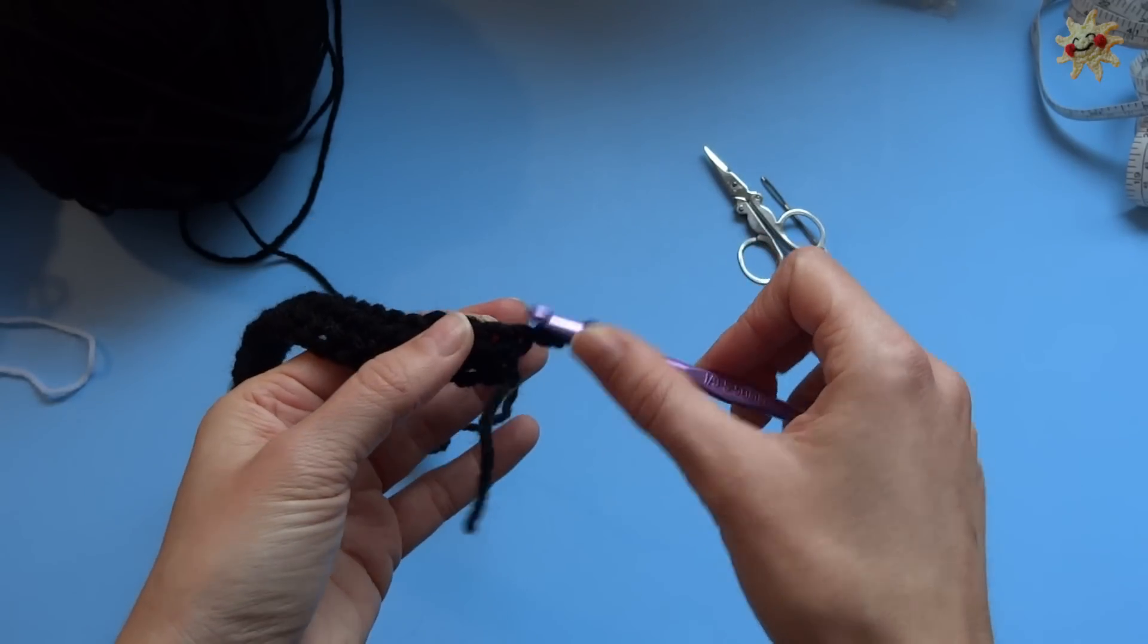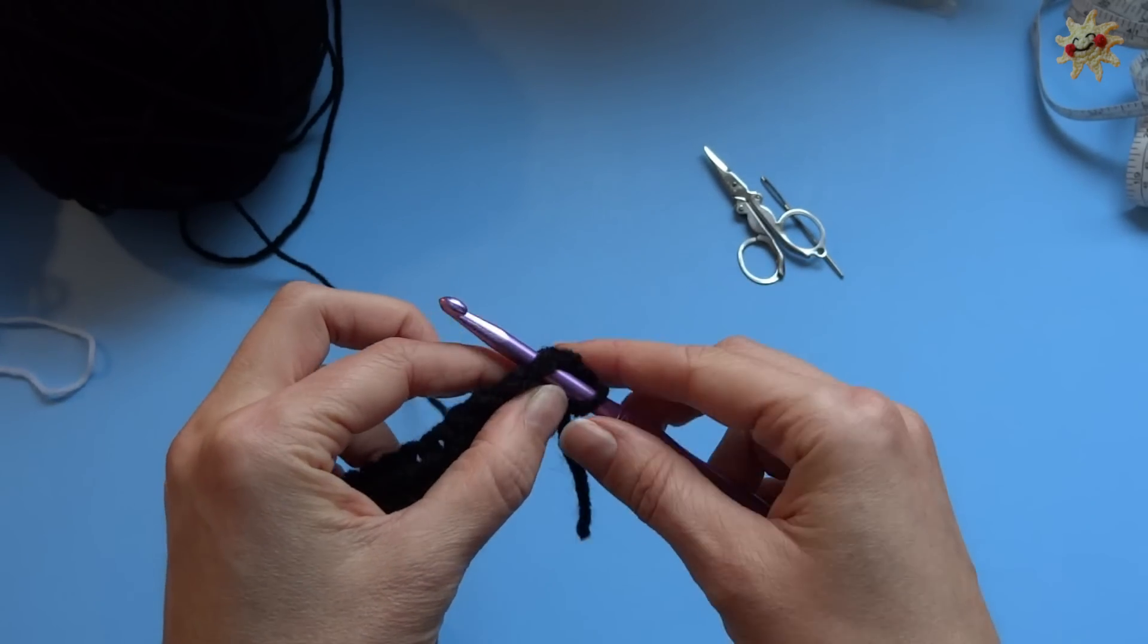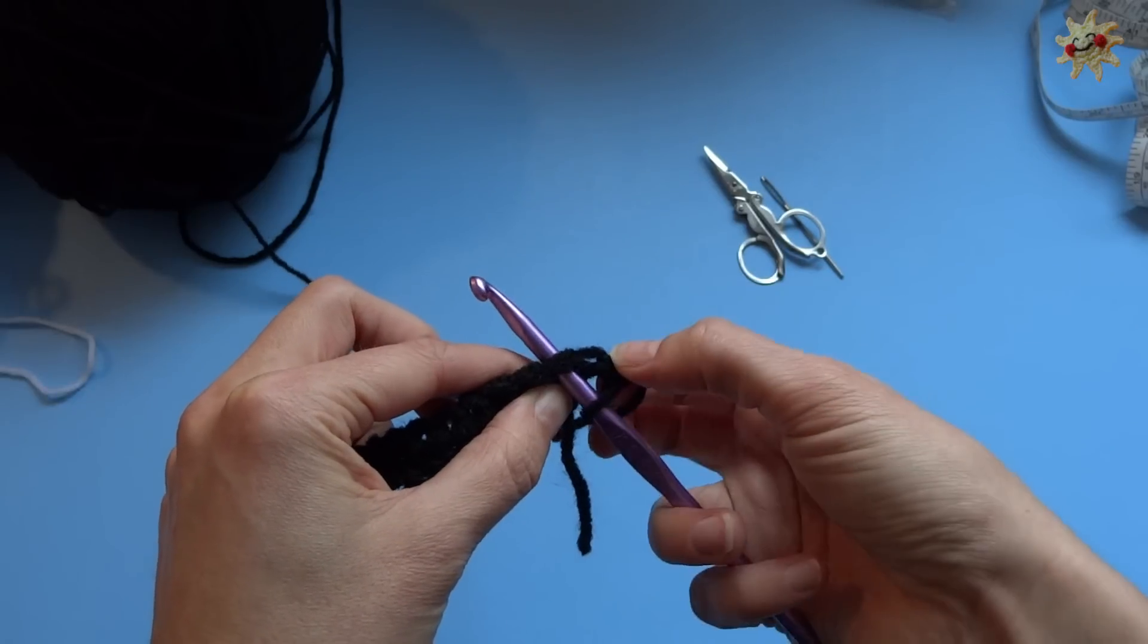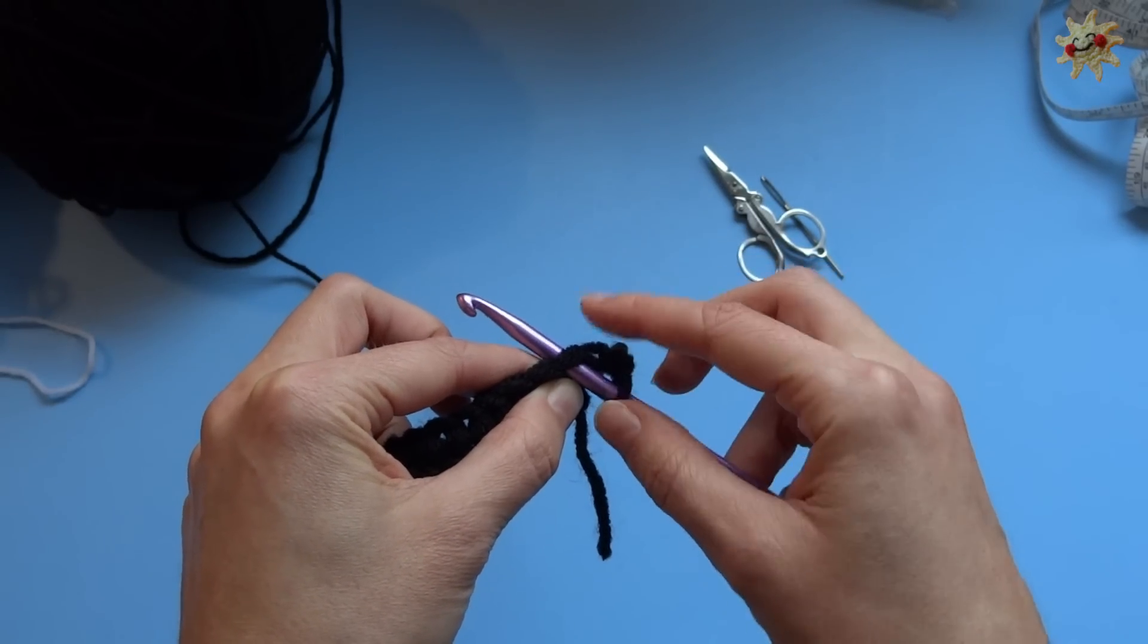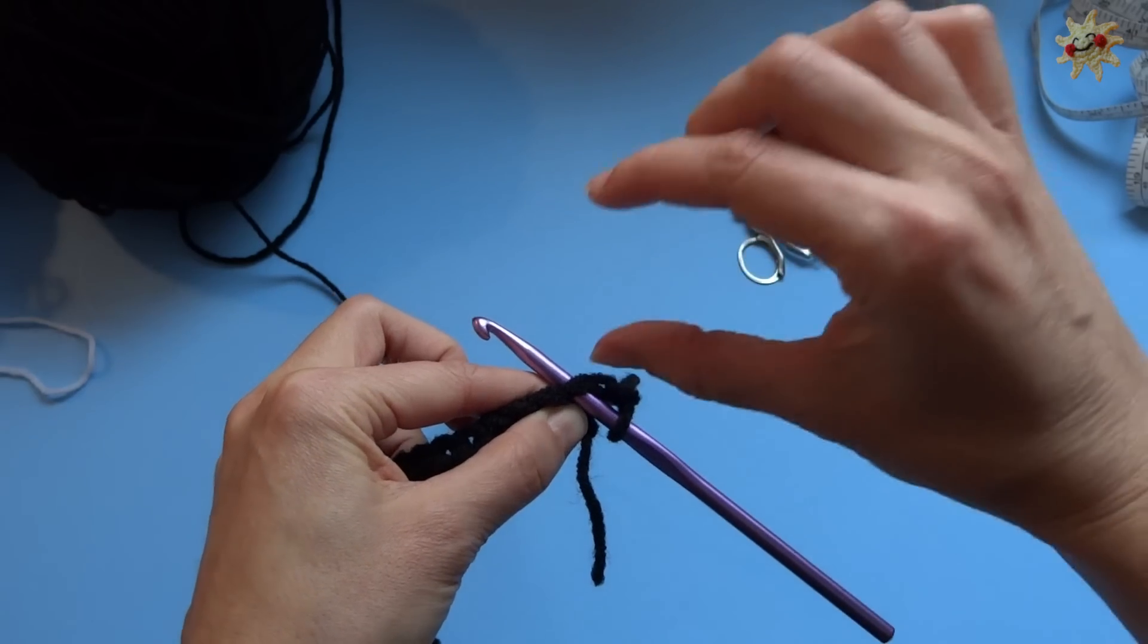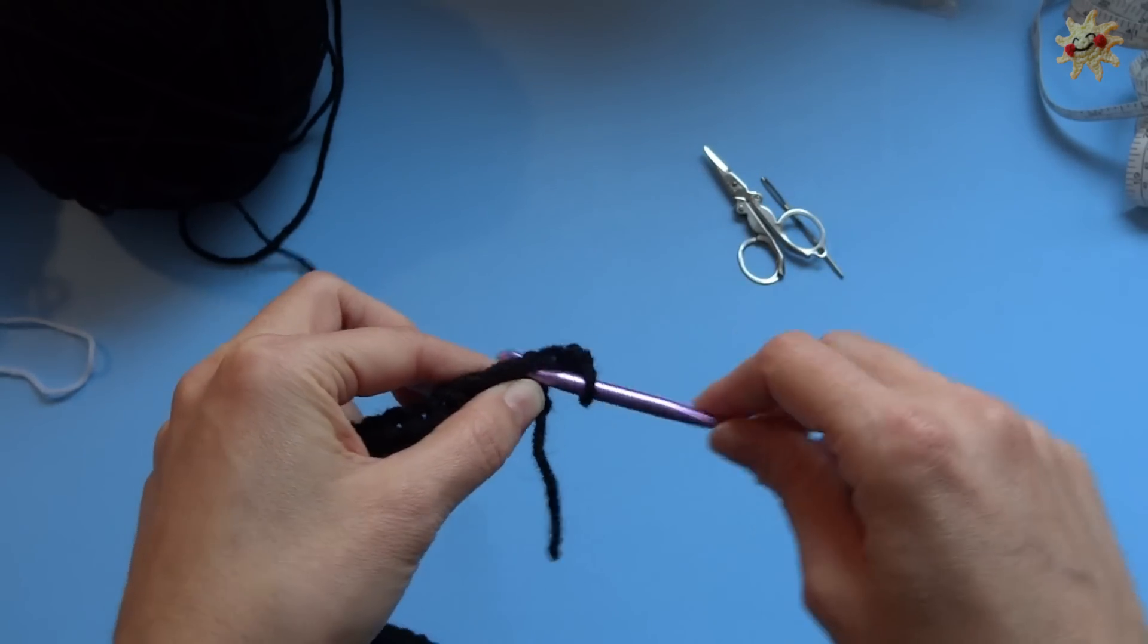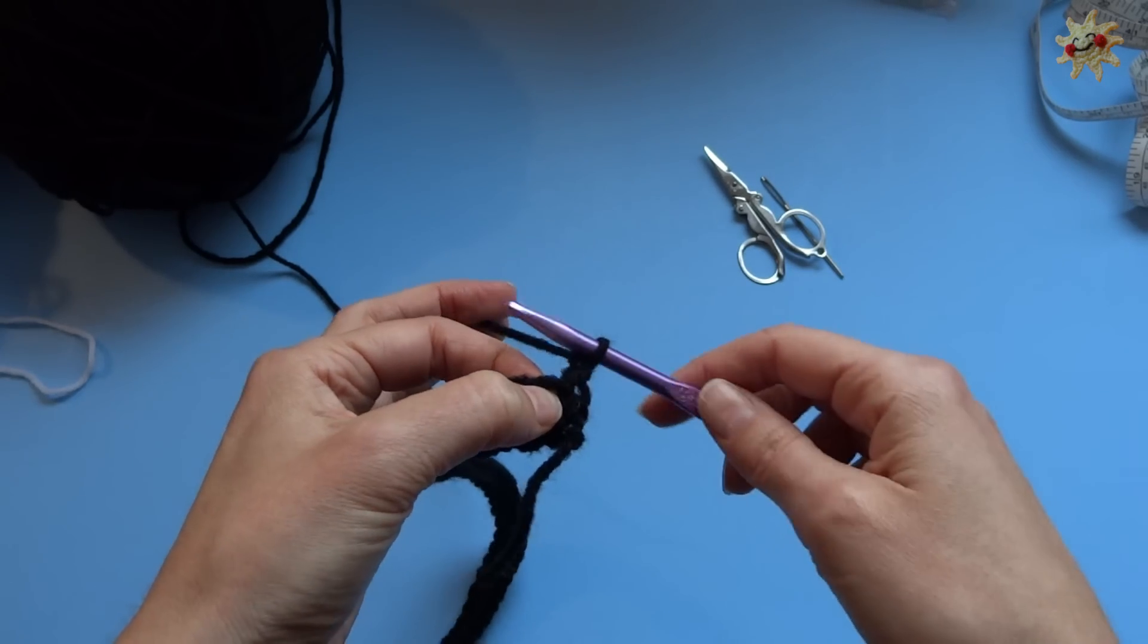it's basically the first real stitch at the bottom of your chain two. Now, normally when you're doing half double crochet frequently, if you're using the chain two as an actual stitch, you would skip the stitch because that's going to be sort of where the chain two would sit, but we're ignoring the chain two. We're not using it as a real stitch. So that first stitch is where we're going to put our first half double crochet.